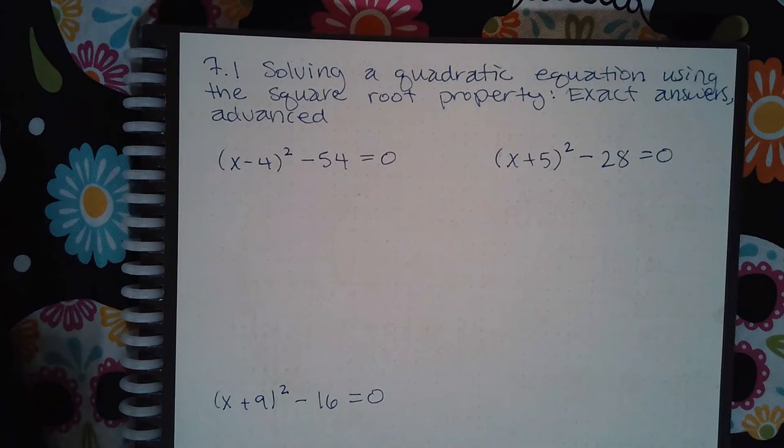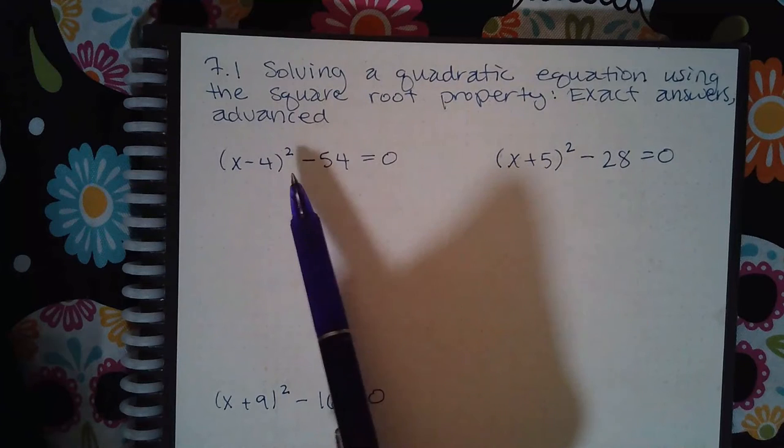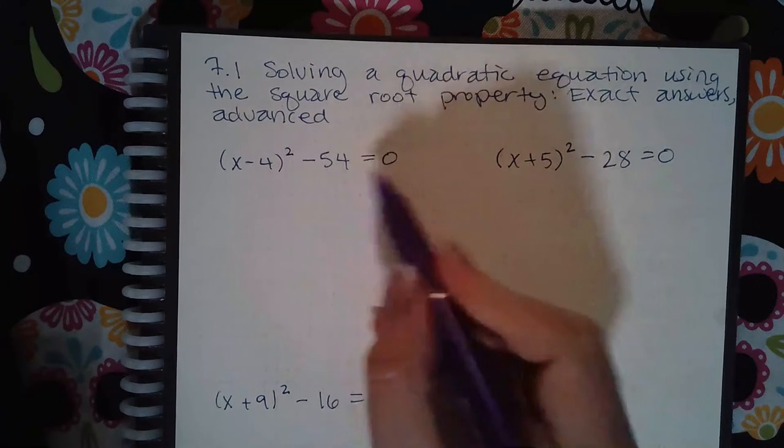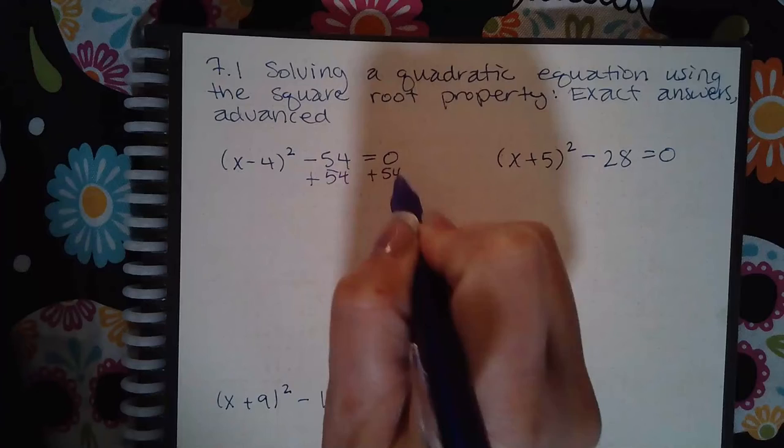Here we have 7.1 solving a quadratic equation using the square root property: exact answers, advanced. So before you can apply the square root property, you do have to have the term or the expression that is being squared isolated. So for this example, I would have to add the 54 over to the other side.